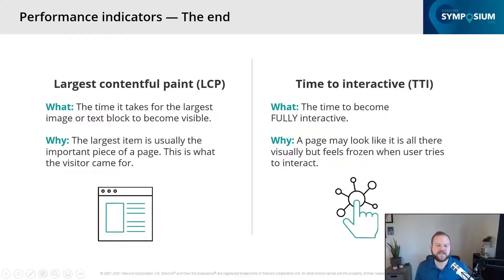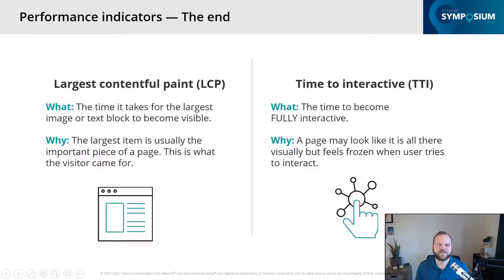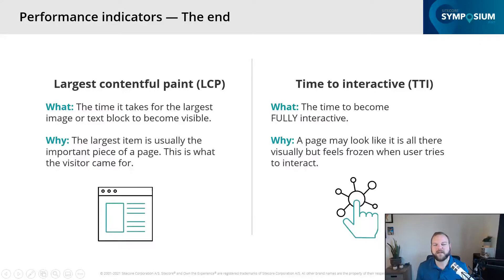Next we have our ending indicators — things that usually happen towards the end of the rendering process. First up is largest contentful paint: the time it takes for the largest image or text block to become visible. I originally thought this was largest in terms of file size, but it's actually physical size, because the largest item on screen is the most important thing on the page. So in the case of my blog, the text takes up most of the page — that's going to be my largest contentful paint.